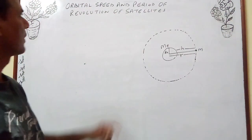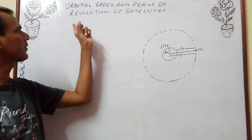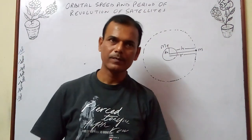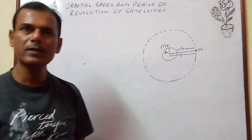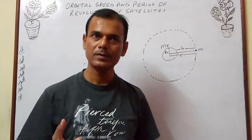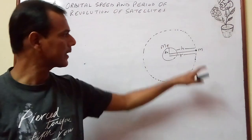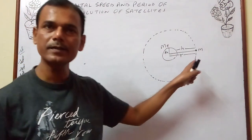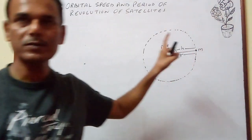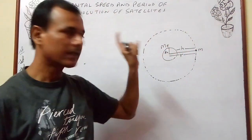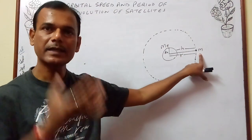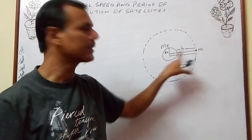Our next topic is orbital speed and period of revolution of a satellite. When an object is moving in a circular orbit, it requires a force known as centripetal force. Similarly, when a satellite is revolving around earth, its path is circular so it requires a centripetal force, which is provided by the gravitational force of attraction between the satellite and the earth.